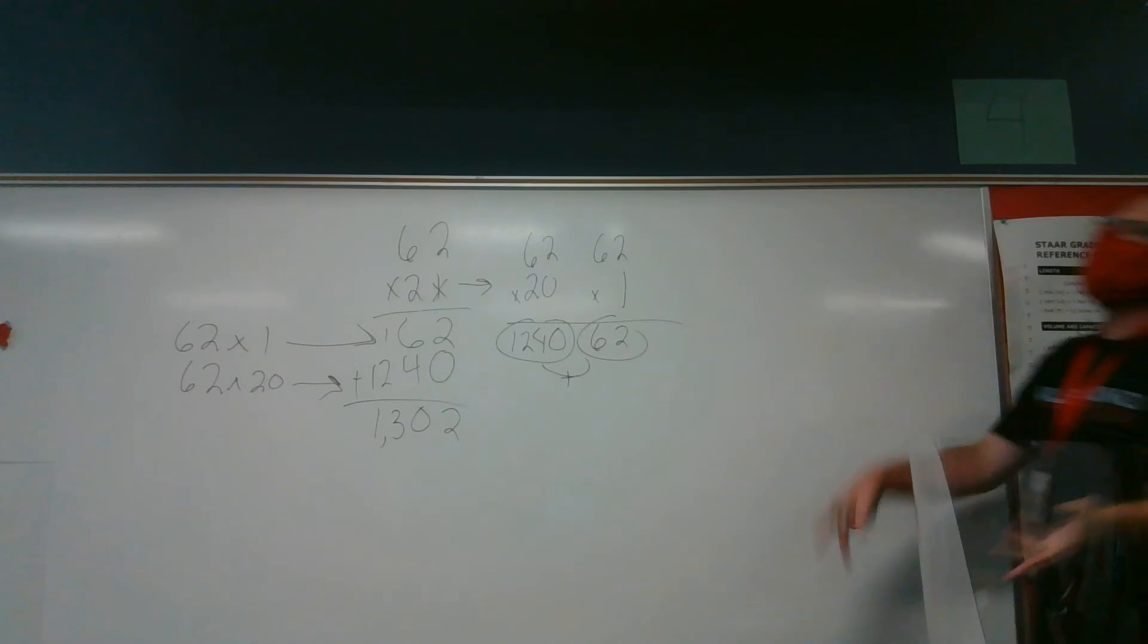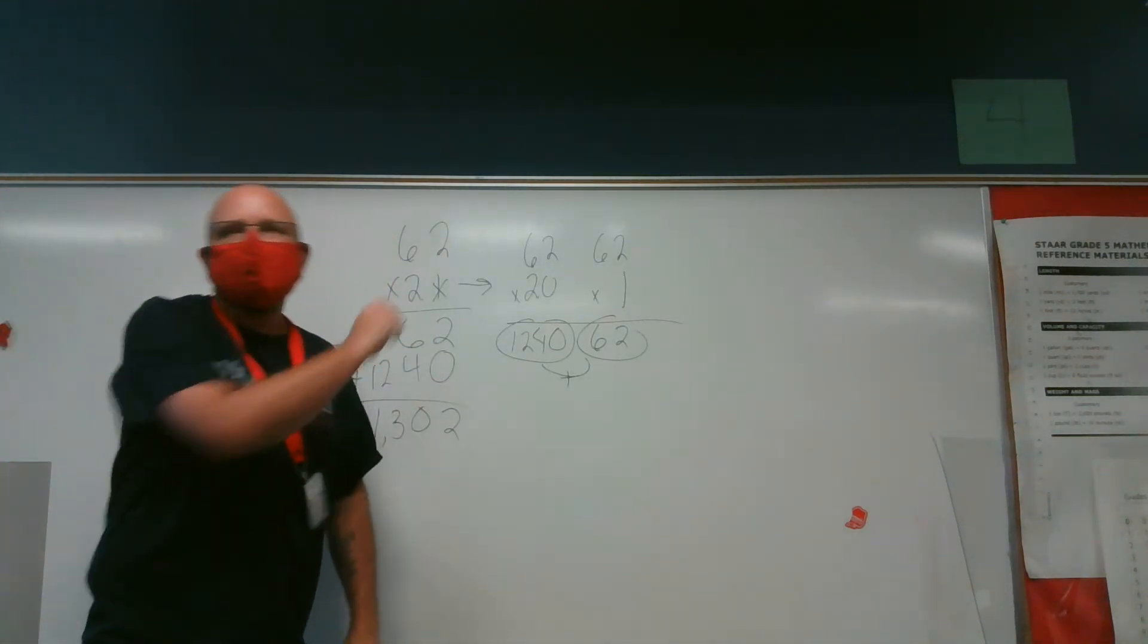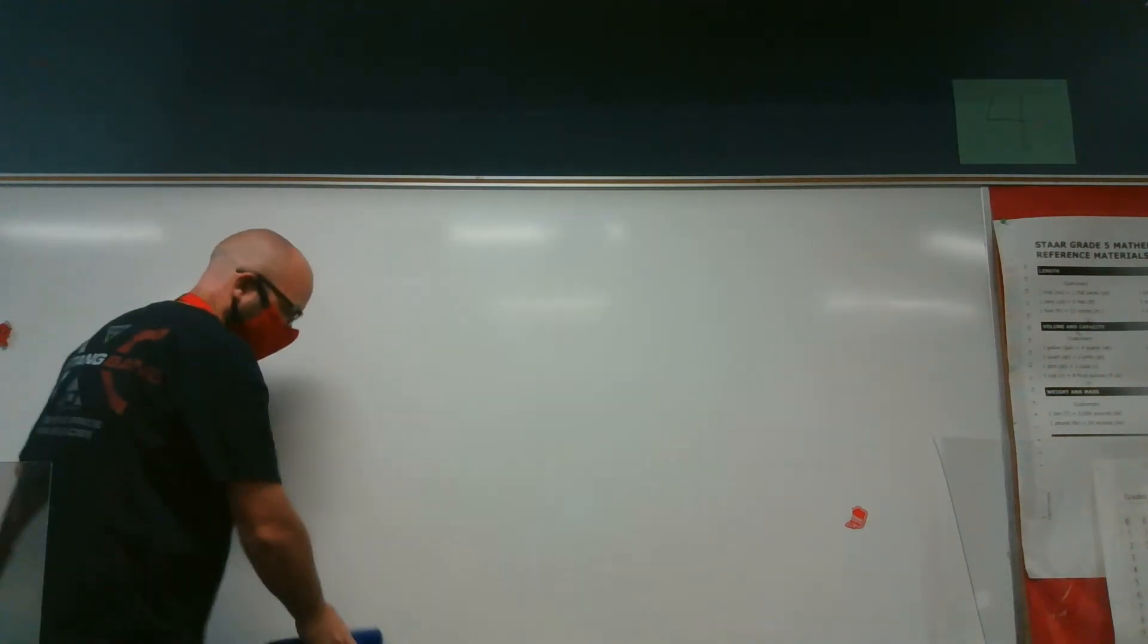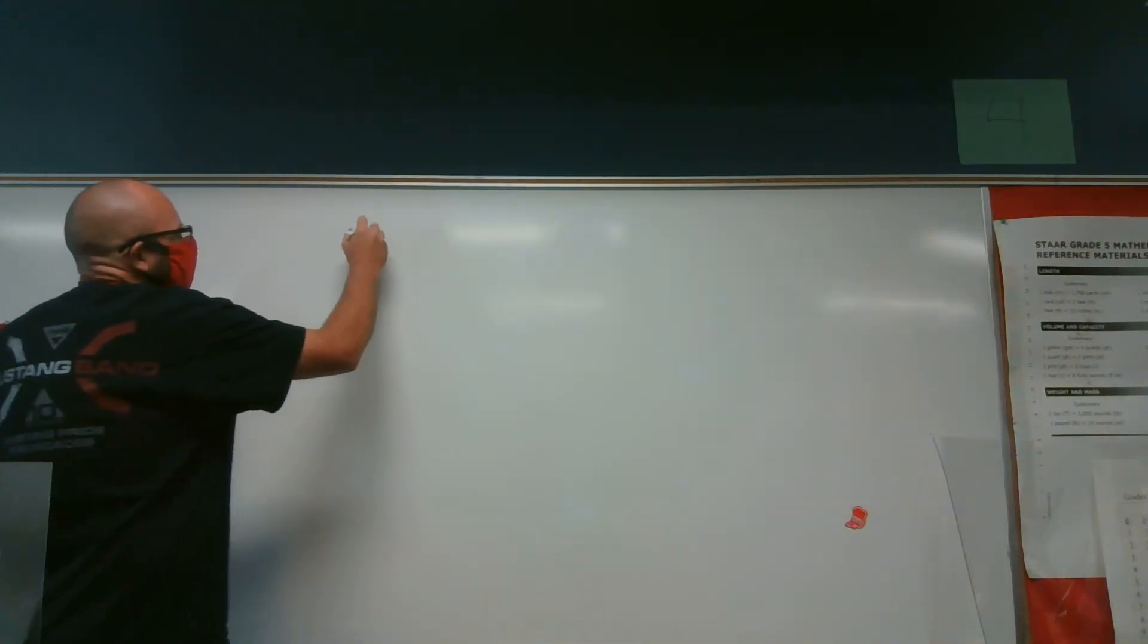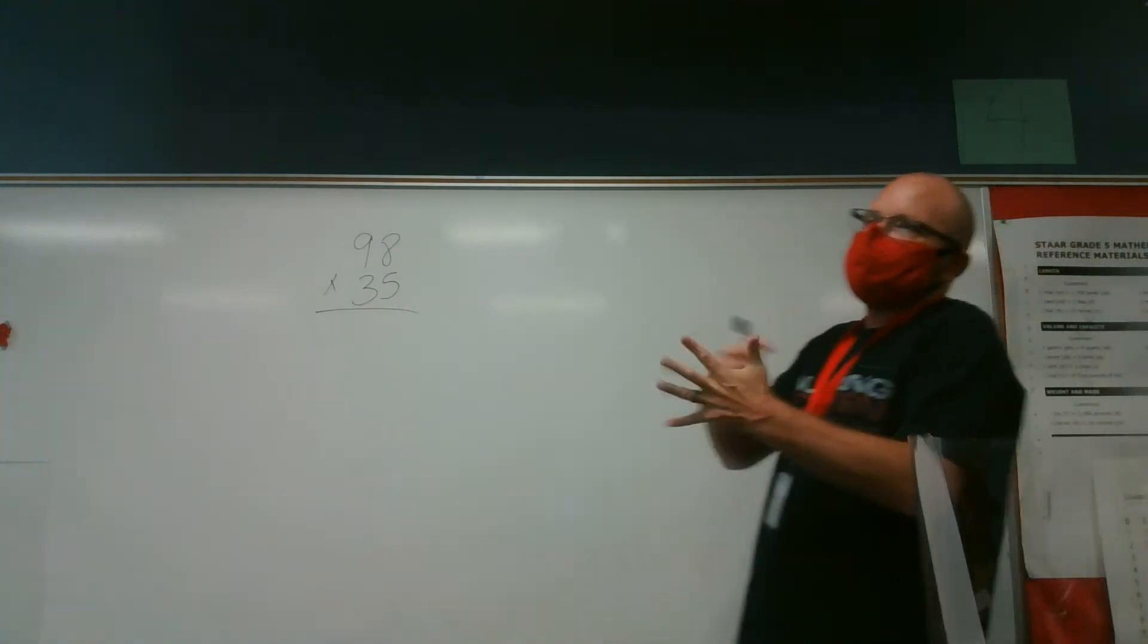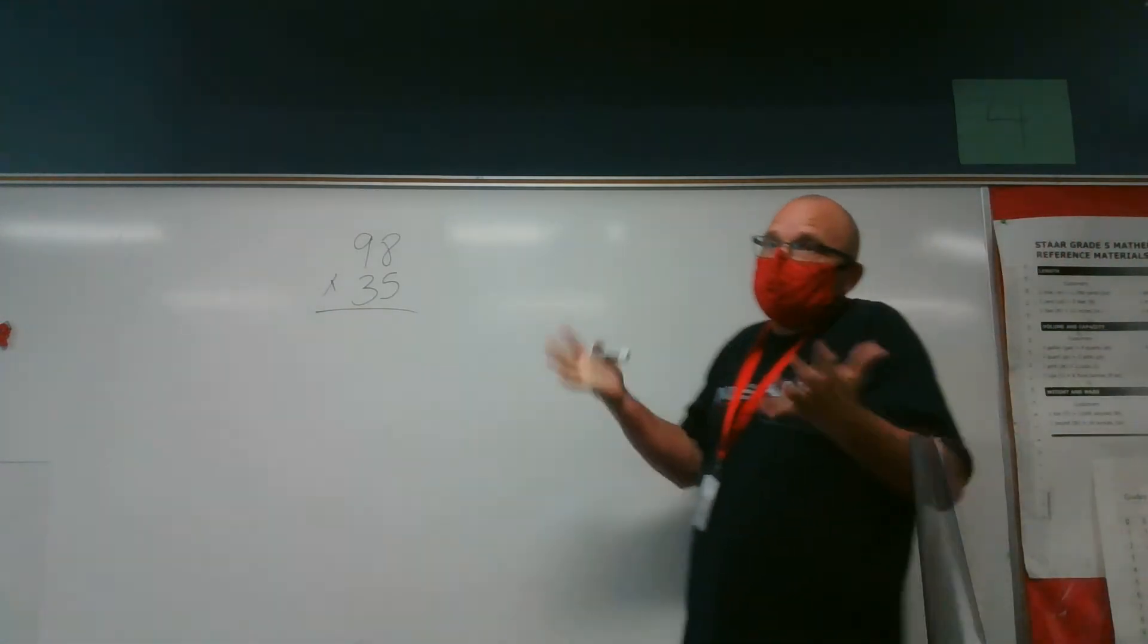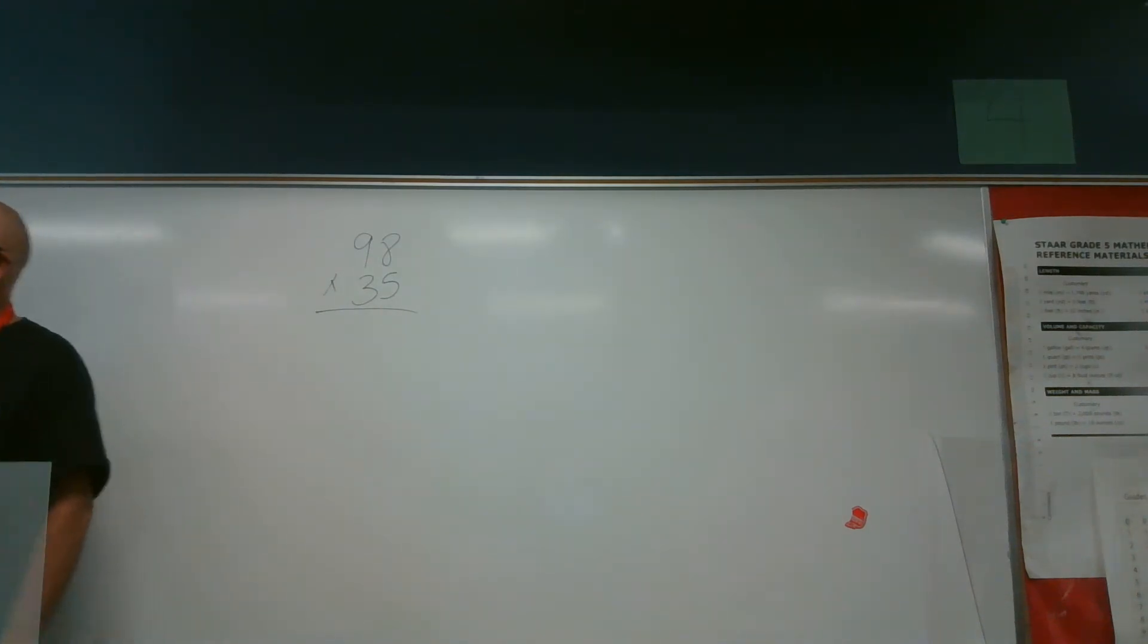It does not matter how big the number is. You still only multiply one digit at a time. One digit at a time. That is it. Oh, let's see. 98 times 35. Oh my gosh, 98 is a big number. I don't care. It doesn't matter. It could be 99. It could be 12. It doesn't matter. It's the same exact thing. And if you don't know your multiplication facts, then you get out your multiplication chart. It's as easy as that.